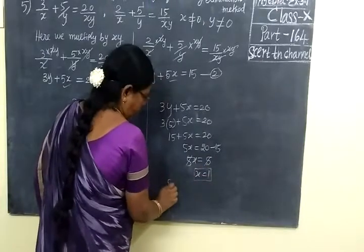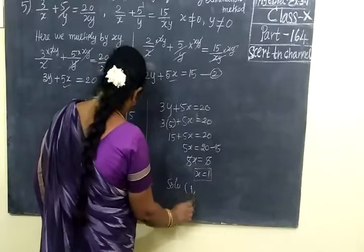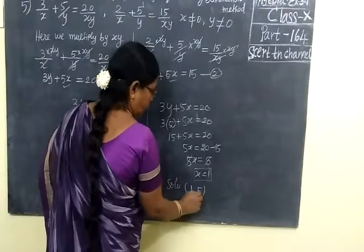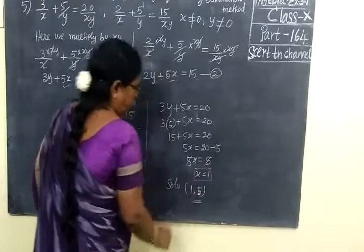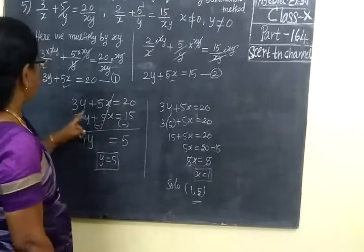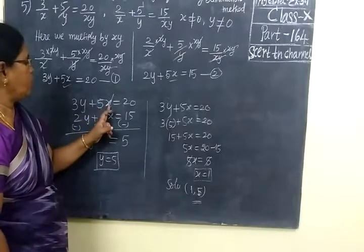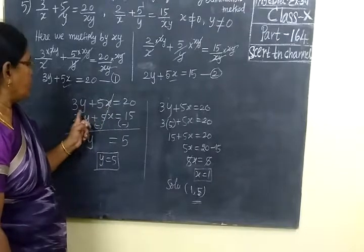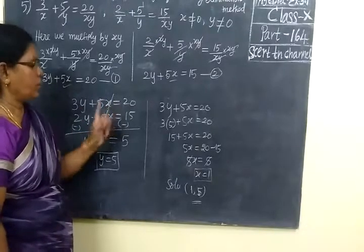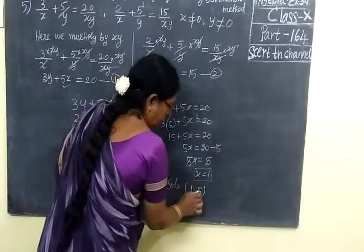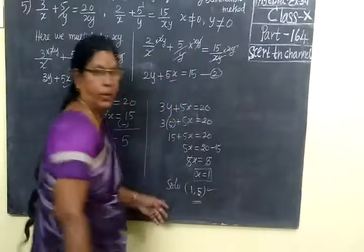Therefore solution for this equation is 1, 5. If you want to check it, you can substitute x is 1 substitute for the, y is 5. Y is 5 substitute for the 15, so 15 plus 5, 20. So this answer is correct. Thank you students.